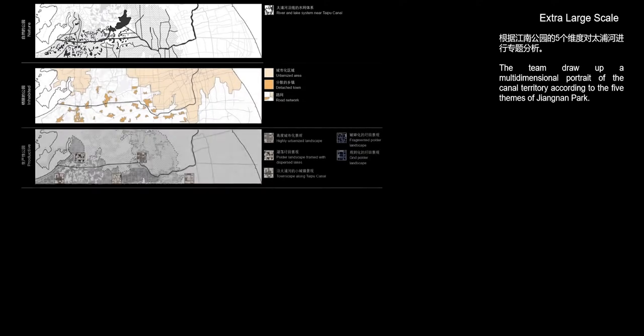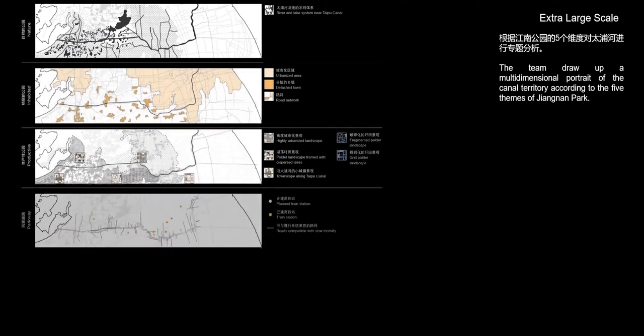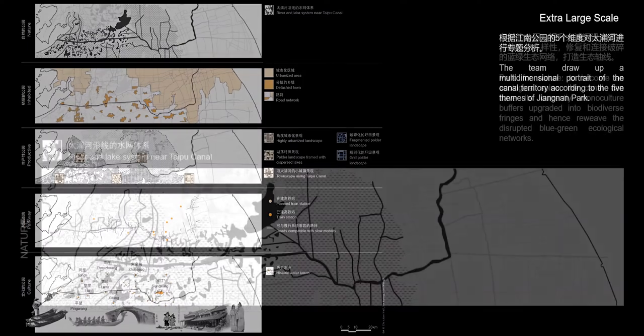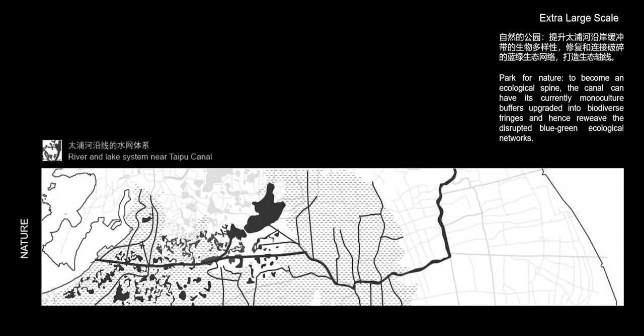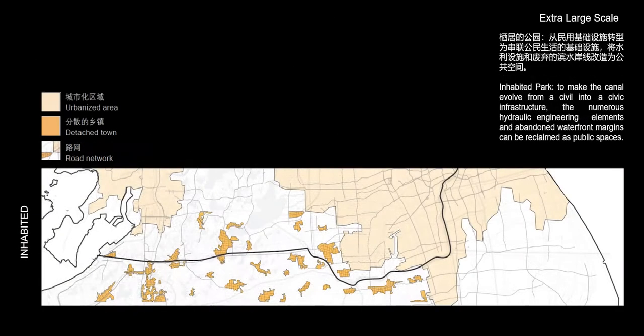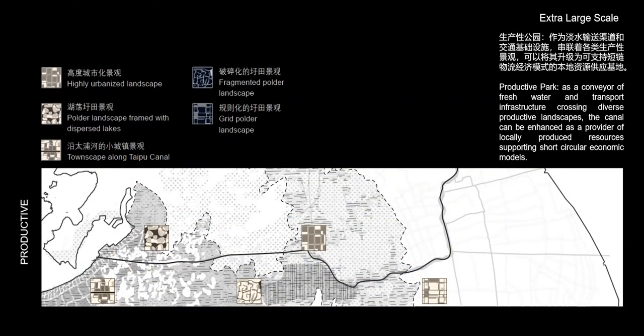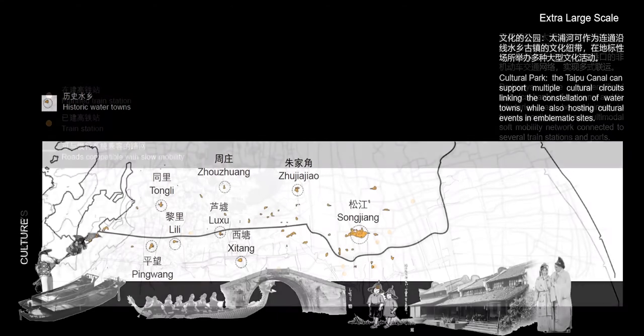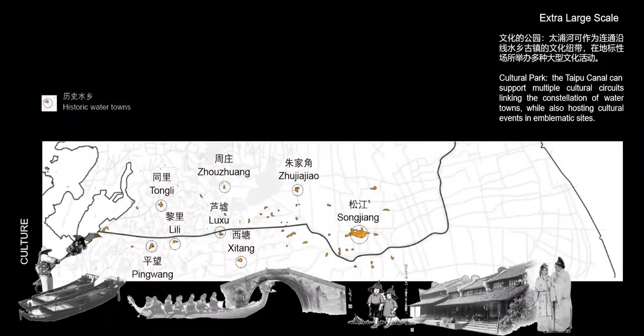The team drew up a multi-dimensional portrait of the canal territory according to the five themes of Jiangnan Park: Park of Nature, Park of Nature Inhabited, Productive Park, Parkways, and Cultural Park.